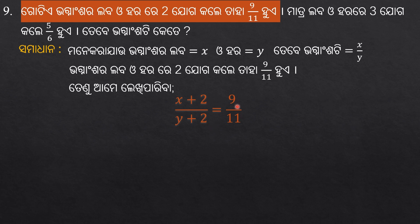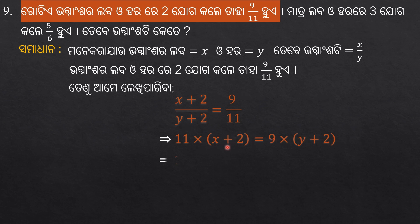Right step, question 9. If we cross multiply it, then 11 multiplied by x minus 2 is equal to 9 multiplied by y plus 2. So we get 11x plus 22 equal to 9y plus 18.